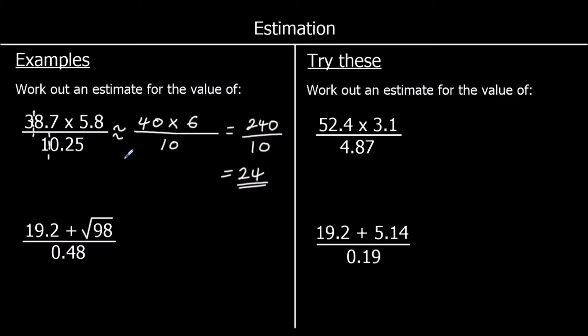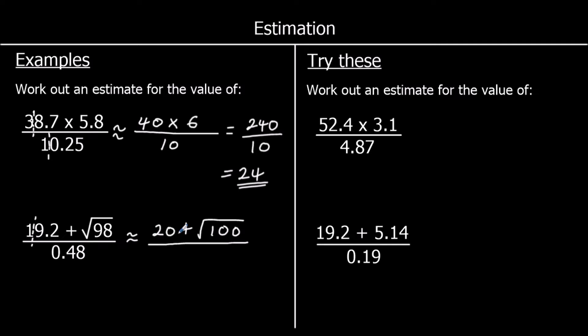For the second one, we've got 19.2 × √98 ÷ 0.48. To one significant figure, 19.2 has first significant figure 1 (worth 10), and 9 after it rounds it up to 20. 98 rounds to 100. For 0.48, the first non-zero digit is 4 tenths; it has 8 after it, so it rounds up to 0.5.